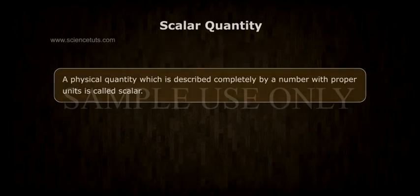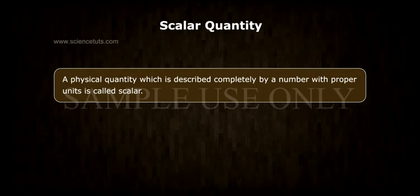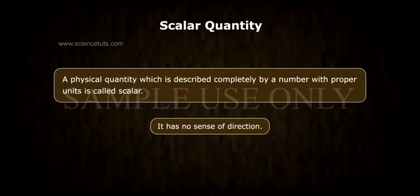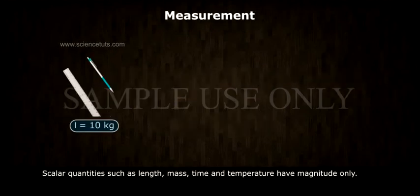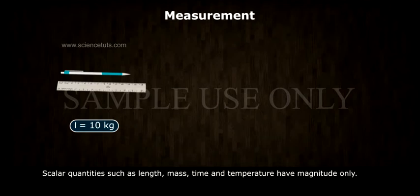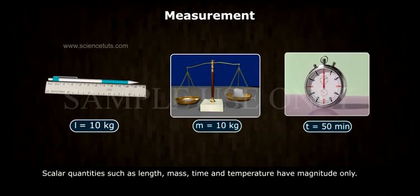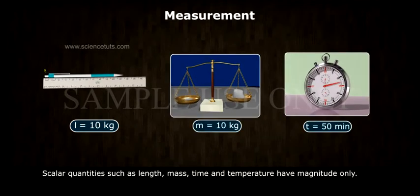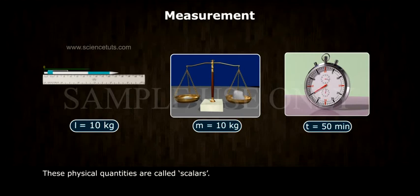Scalar Quantity: A physical quantity which is described completely by a number with proper units is called scalar. It has no sense of direction. Scalar quantities such as length, mass, time and temperature have magnitude only. These physical quantities are called scalars.